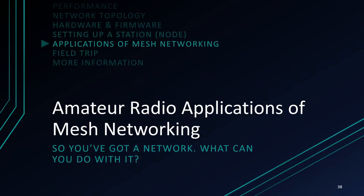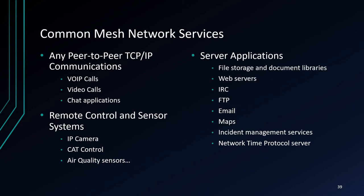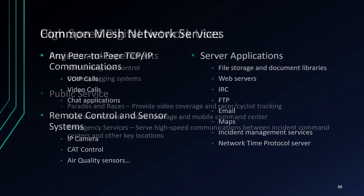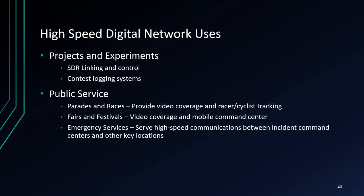What sort of things can you use your mesh network for? Some common mesh services include VoIP phone systems and servers, video call services, chat applications, IP cameras for towers and remote sites, file servers, map servers, incident management applications, and more. Really, any type of internet application can be used on a mesh network. The high-speed digital network an amateur mesh provides can be used for Field Day to support network contest logging systems. Mesh networks have also been used to support parades, races, marathons, festivals, and other public events. And as talked about earlier, mesh networks can be a great tool for emergency services and communications.